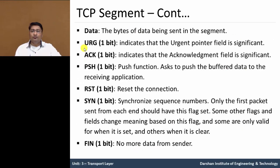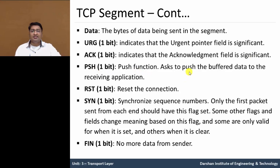Data is the application message in terms of bytes being sent in a segment. The URG 1-bit field indicates that the urgent pointer field is significant. The acknowledgement bit is 1-bit and indicates that the acknowledgement field is significant. The PUSH function, using 1-bit, asks to push buffered data to the receiving application.